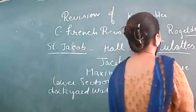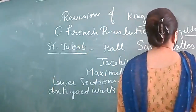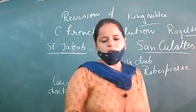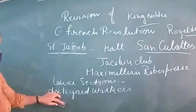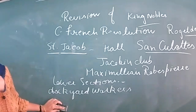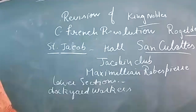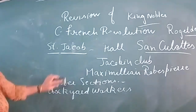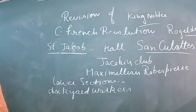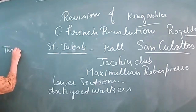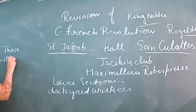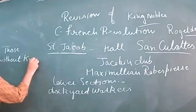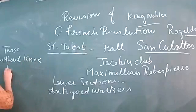The Jacobin Club members had a special dress. They were called sans-culottes. Sans-culottes means those who are without knee breeches. They wore striped trousers, while nobles wore knee breeches.